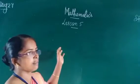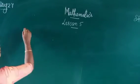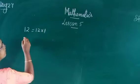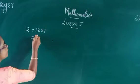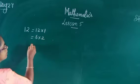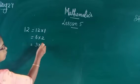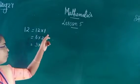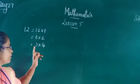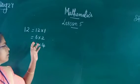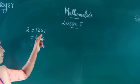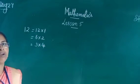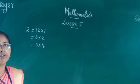For this, we can consider the number 12. 12 can be expressed as 12 into 1, then 6 into 2, and 3 into 4. So here we can say that 1, 2, 3, 4, 6, and 12 are the factors of 12.